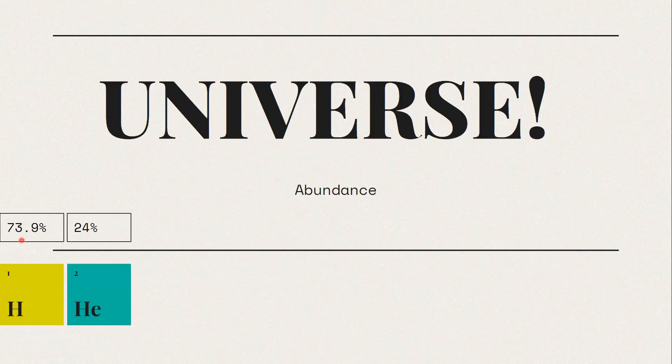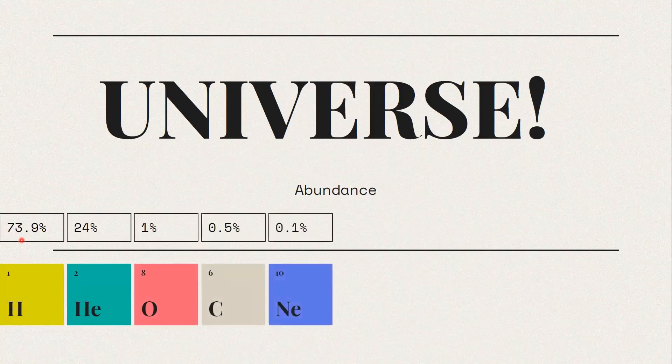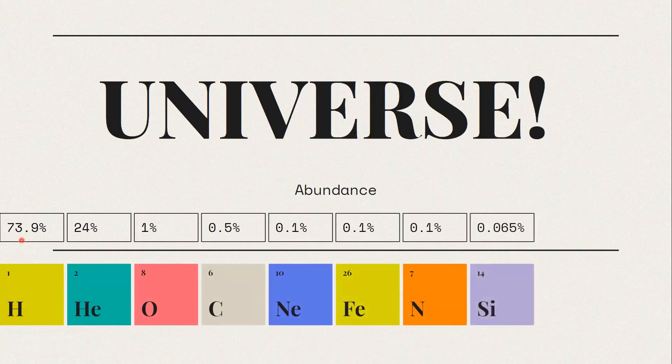All our stars, supernovas, and black holes exist because of these two gases. Next is oxygen at 1%, followed by carbon at 0.5%, neon 0.1%, iron 0.1%, nitrogen 0.1%, and silicon 0.065%.